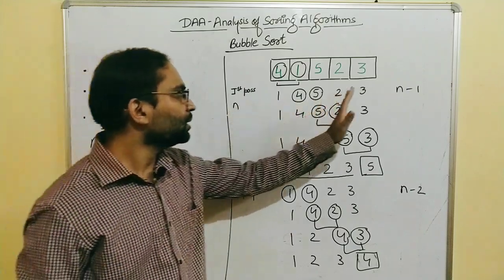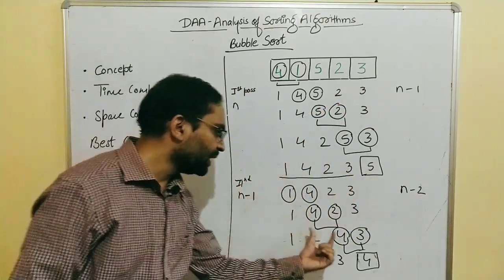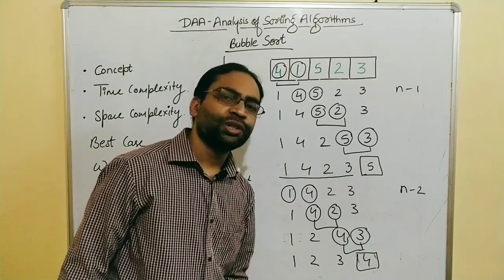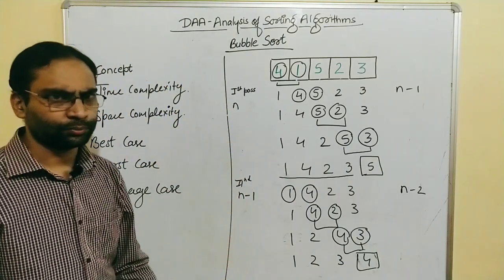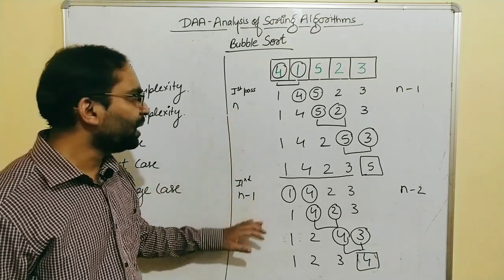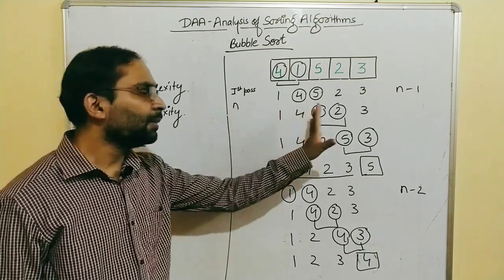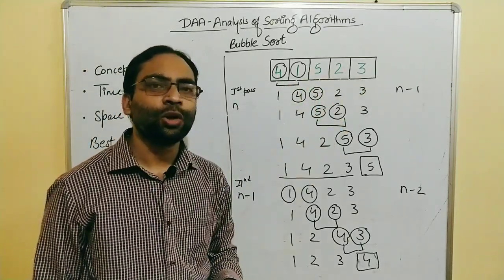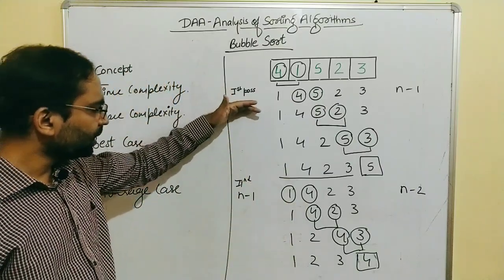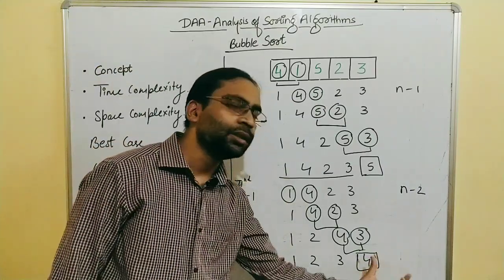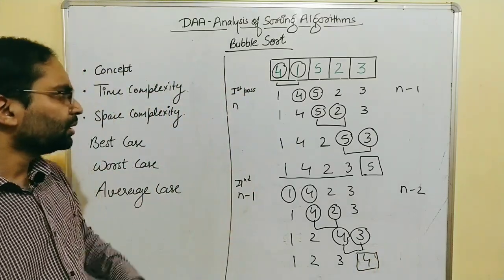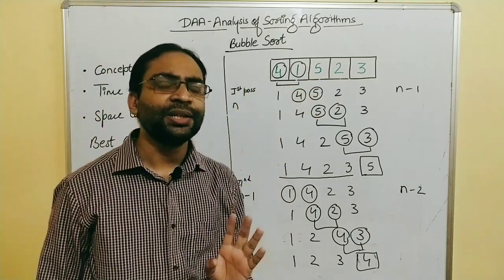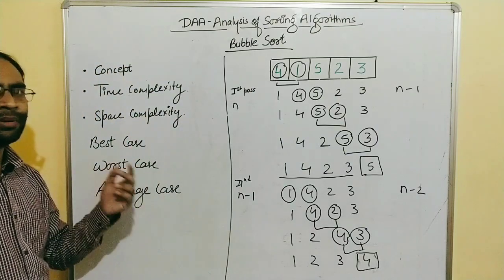After the first pass, the last element is in position. After the second pass, the second last element is also in its position. Similarly, in the third pass the third last element will be placed, and so on. We need to perform all these passes to complete bubble sort. Once all passes are done, the array will be in sorted order.